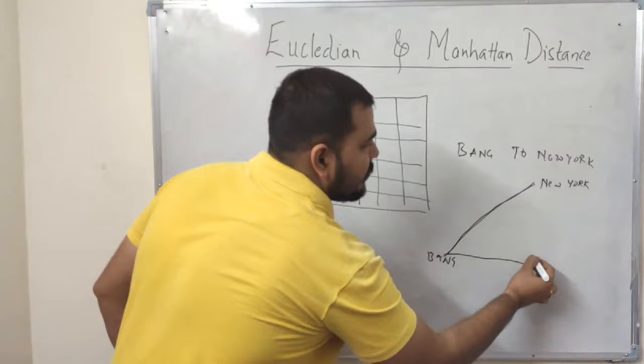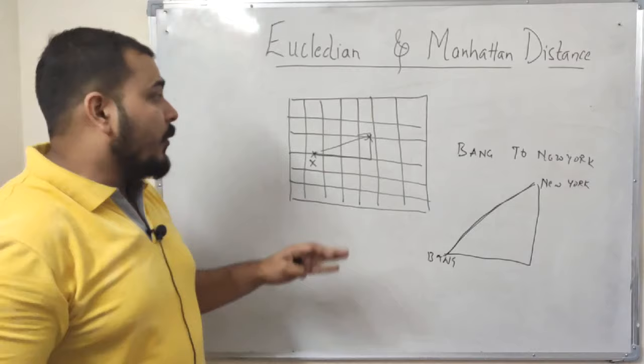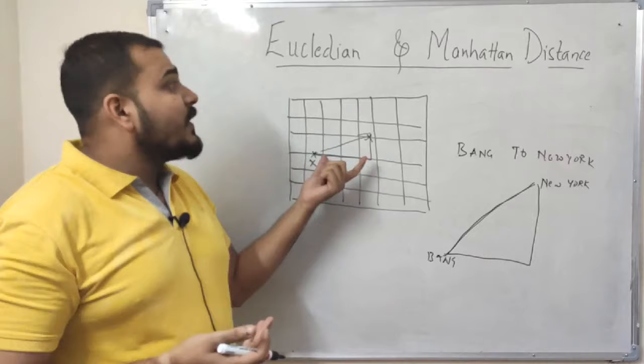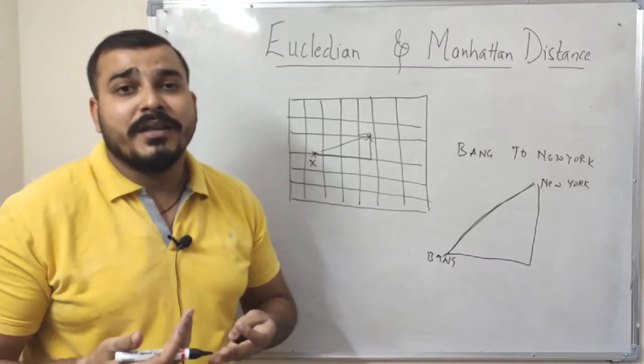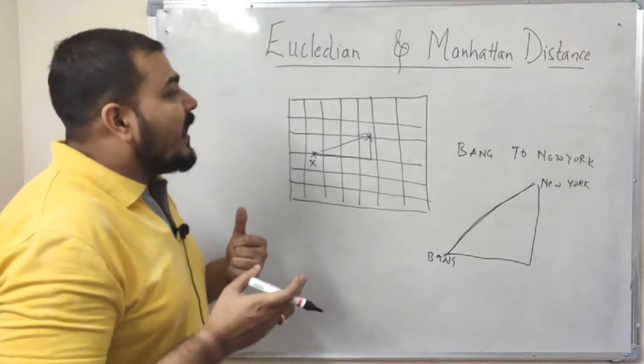So that particular distance parameter will be used in that particular scenario. So most of the Google Maps over there in most of the developed countries works in this particular pattern only. And by that also you'll be able to get distance, how many kilometers, how much time it may reach over there and all those kind of stuff. And this was the basic example and difference between Euclidean and Manhattan distance. And you also understood what is the main practical application over there.